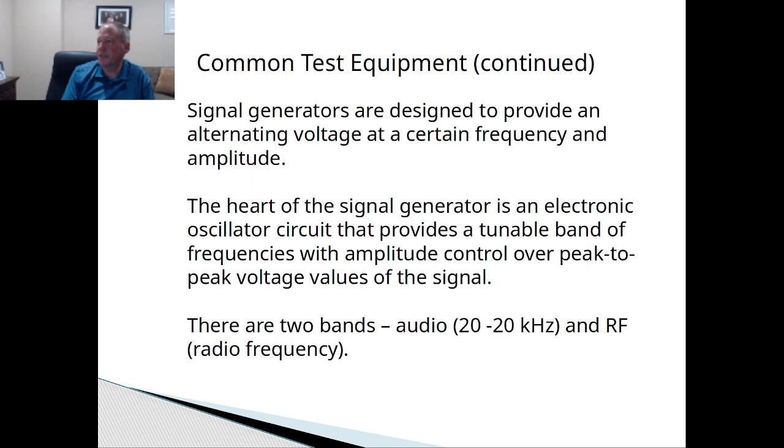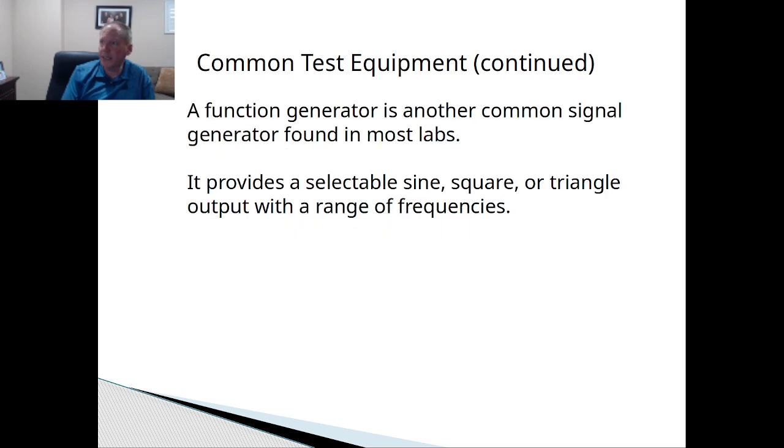And finally, with the signal generators, you can provide the source. So like in the DC class, we would use batteries or the power supply. And in AC, you're going to use the function generator and the function generator, which is in room 405 on the bench. And it's also in room 401 with the analog scopes.